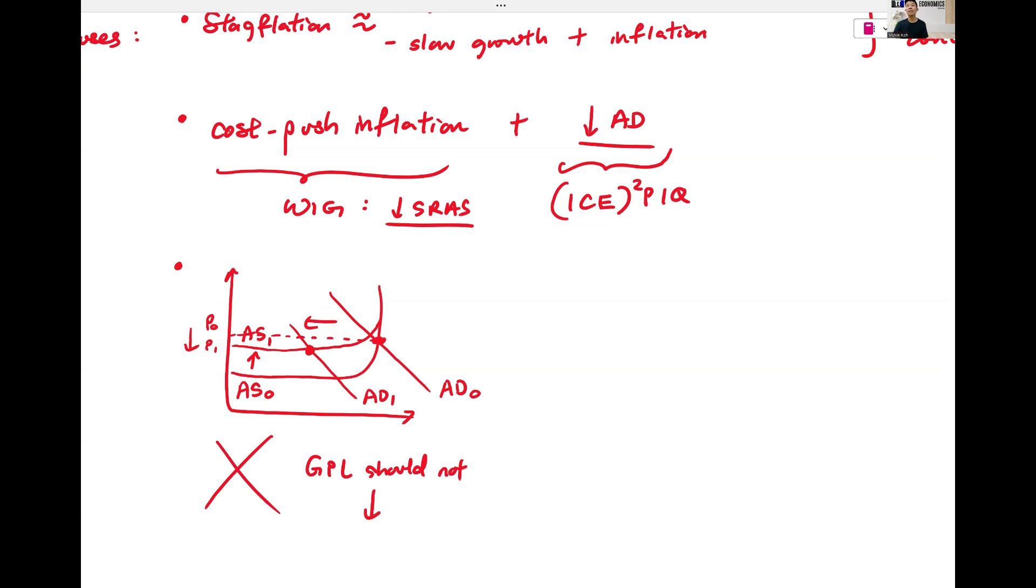It is stagflation. So how do you avoid showing a case where GPL falls? Make sure AD does not start from the vertical section, the vertical part of LRAS. Because if it starts from the vertical section, there's a good chance your diagram is wrong.